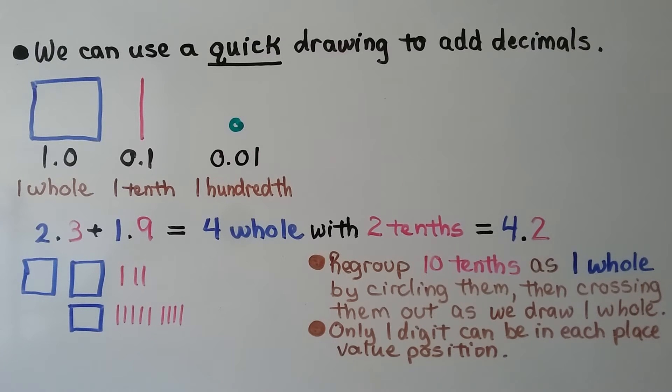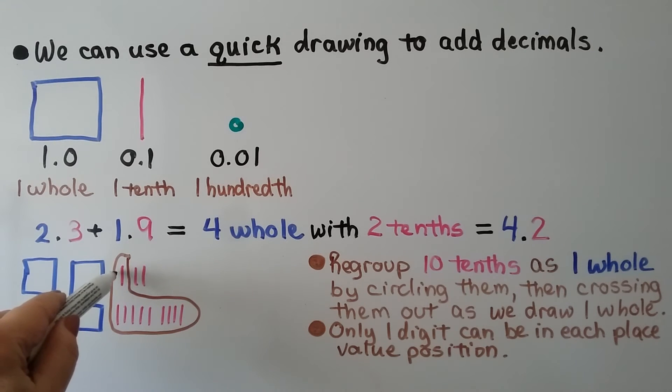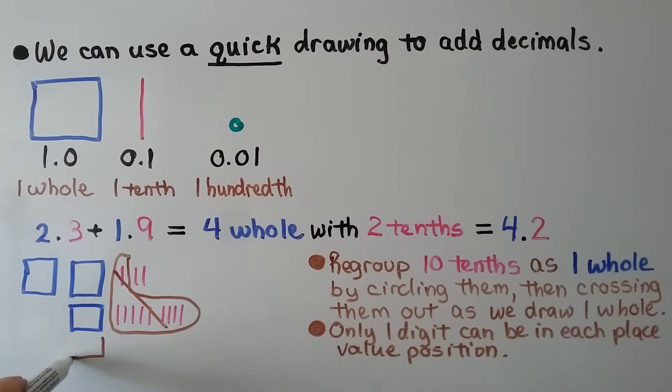Now we can regroup the tenths as 1 whole by circling them. That's 10 tenths. Then crossing them out as we draw 1 whole. So 10 tenths would be equal to 1 whole. We can add another 1 whole here. Only 1 digit can be in each place value position. We have 1, 2, 3, 4 whole and 2 tenths. It's equal to 4 and 2 tenths.